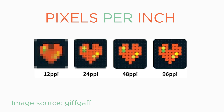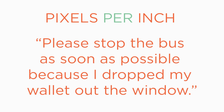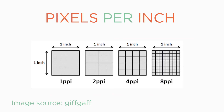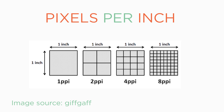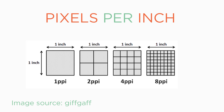You can think of pixels per inch like words and sentences. If you have a sentence like 'please stop the bus,' you don't get a whole lot of information. If you have more words in that sentence, like 'please stop the bus as soon as possible because I dropped my wallet out the window,' you know a whole lot more information. In the same way, if your resolution is 2 pixels per inch, you have a lot less information than if you have 4 pixels per inch, or 8 pixels per inch, or higher.